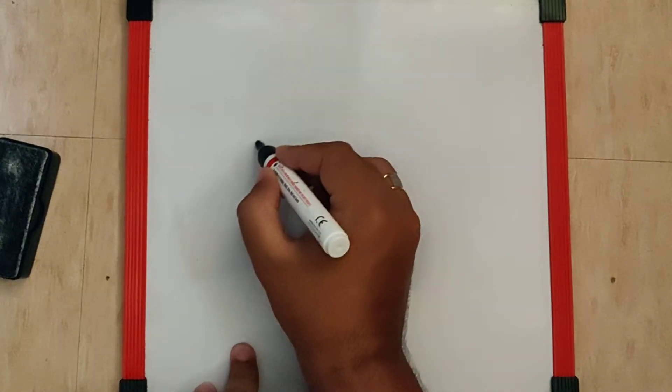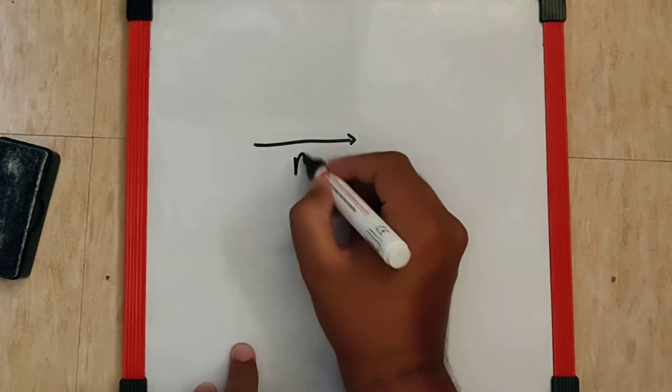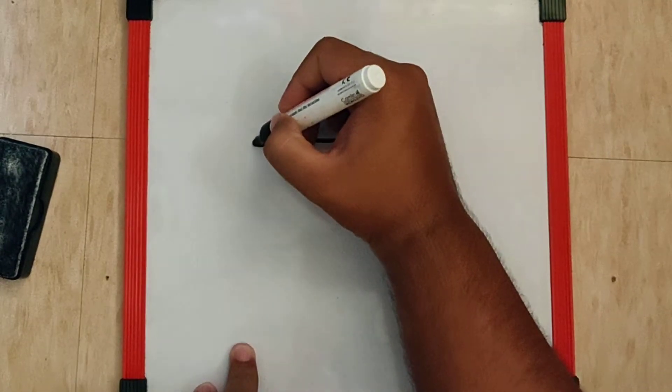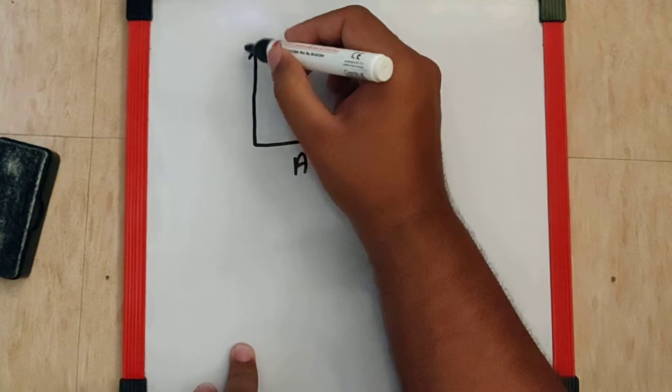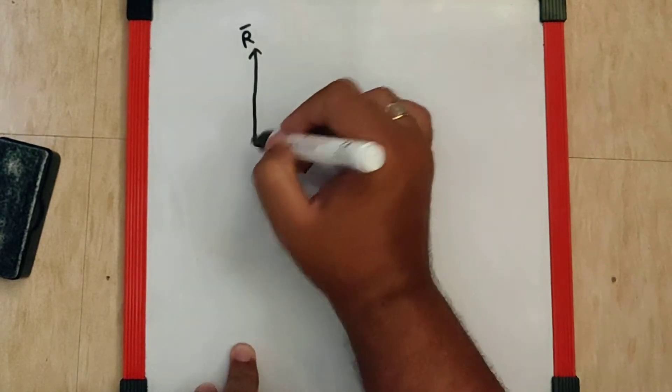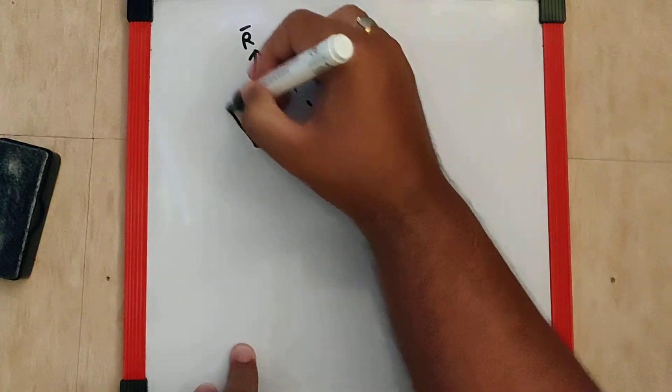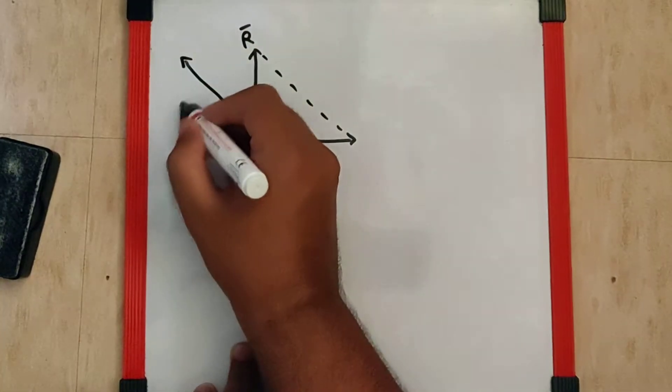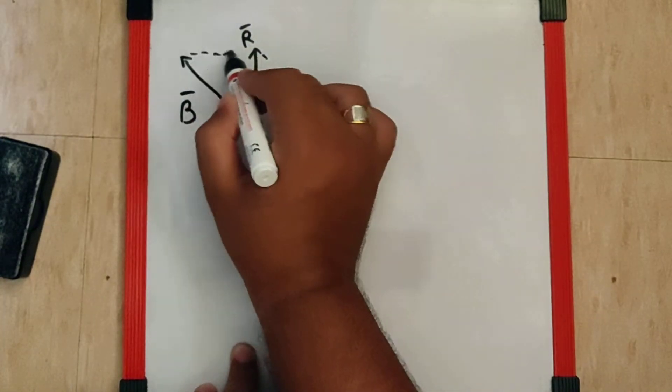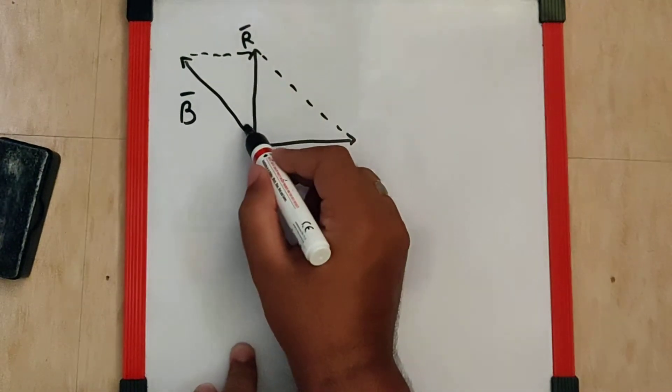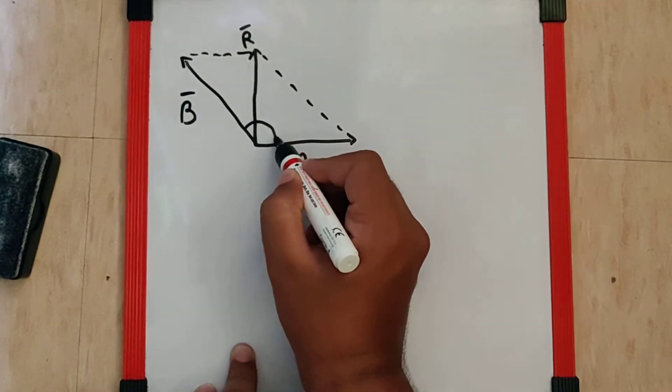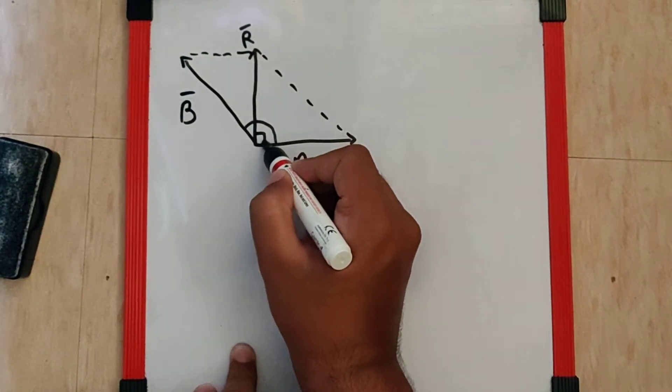In the question they have given us a diagram where this is vector A, this is vector R, and this is vector B. Now we want to find this angle. We know this is 90 degrees.